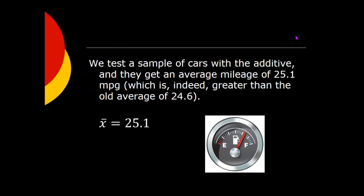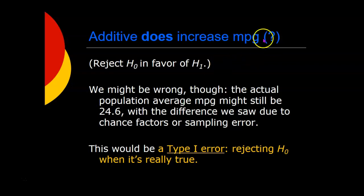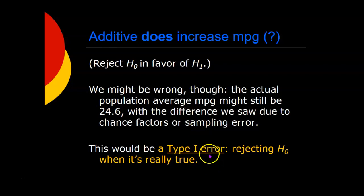So we have to decide whether or not to say this makes a difference. If we say it does, we are rejecting the null hypothesis in favor of the alternative hypothesis. And we might be wrong about that, in which case we're making a type 1 error — rejecting the null hypothesis, saying there is a difference when there really is not a difference in general, and the difference we saw in our sample is just due to sampling error, random variation among individuals.